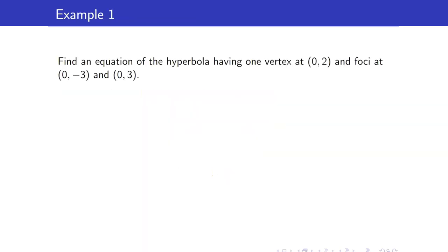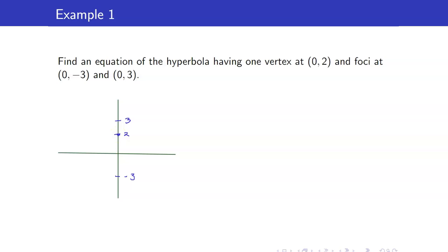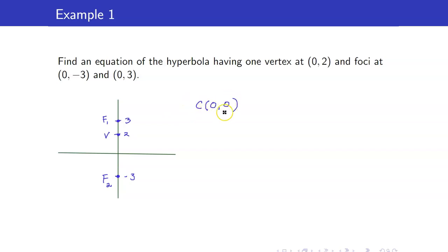Let us find the equation of the hyperbola having one vertex at (0, 2) and foci at (0, -3) and (0, 3). First, let us plot the points that were given to us. We have the vertex (0, 2) and foci at (0, 3) and (0, -3). Since our foci are these two points, the midpoint of this line segment is the center. So therefore, our center is (0, 0).